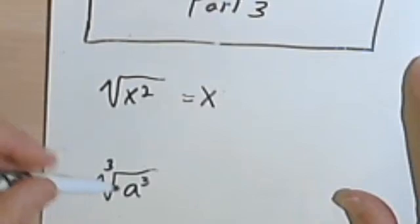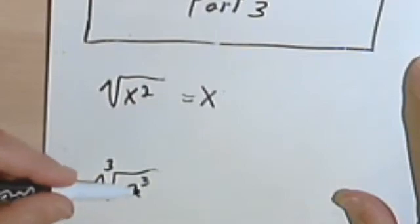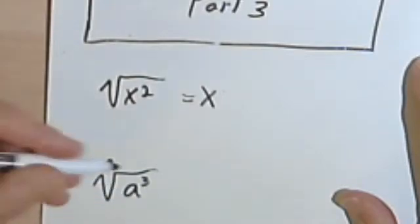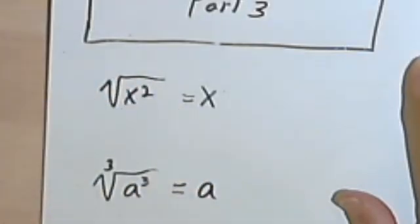Here's another one. I need to find the third root of a to the third. So I'm looking for the variable that I can raise to the third power to get a to the third. And once again, there's really no difficulty to it. It's just going to be a.